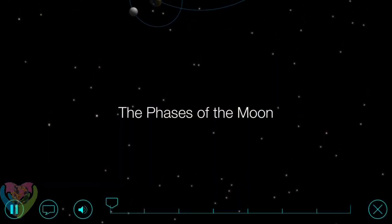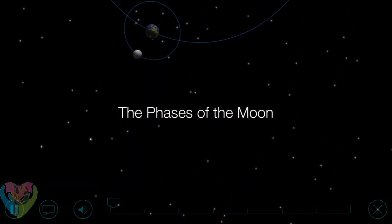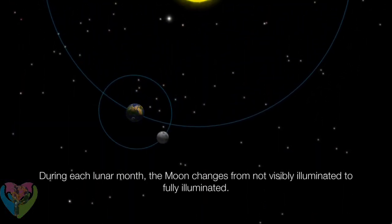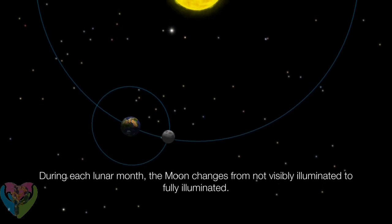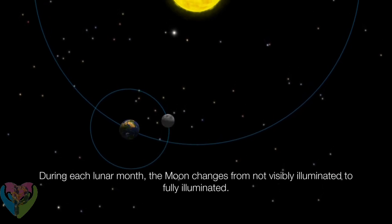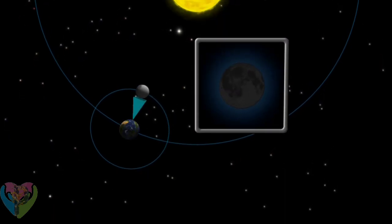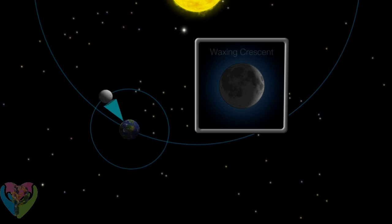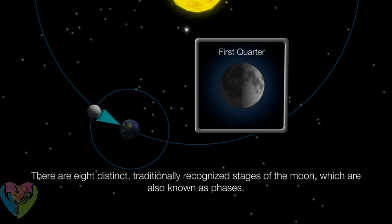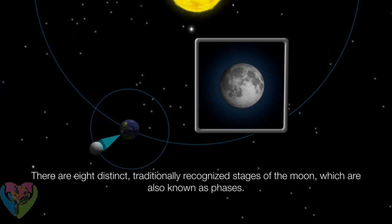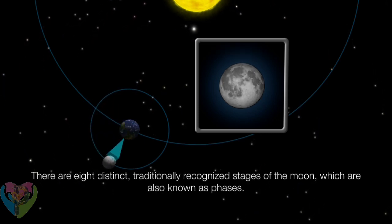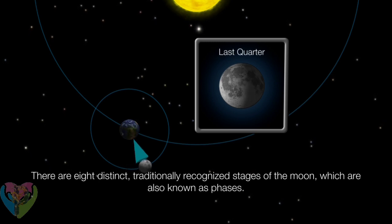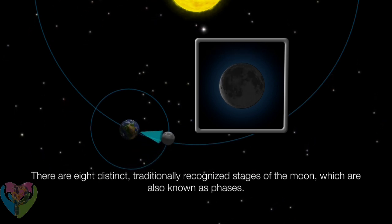The phases of the moon. Why does the moon look different every night? During each lunar month, the moon changes from not being visibly illuminated to being fully illuminated. There are eight distinct, traditionally recognized stages of the moon, which are also referred to as its phases.